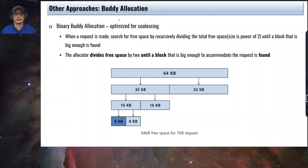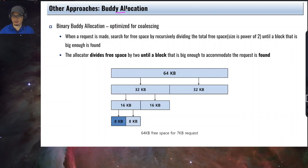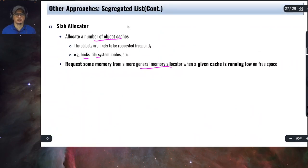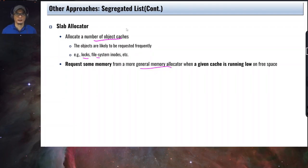The idea of the slab allocator is to pre-allocate certain sizes for popular requests — for example, for different kernel data structures. Once you run out of space, the allocator can request additional memory from the general memory allocator. When everything is unused, the memory is returned to the general memory allocator. In effect, the slab allocator creates caches that can be allocated immediately to the requesting process.